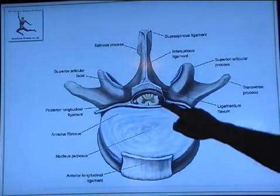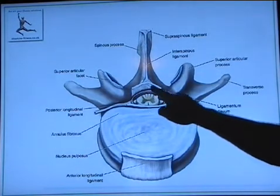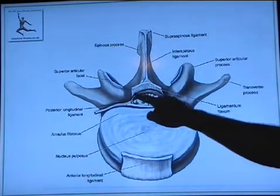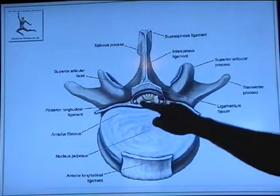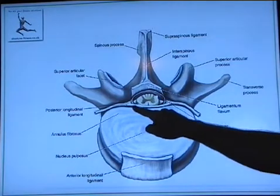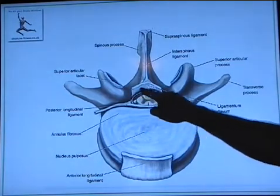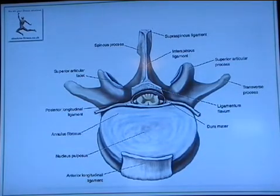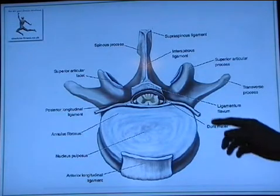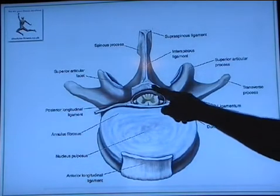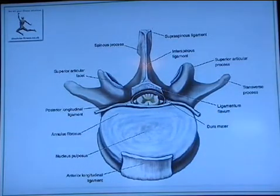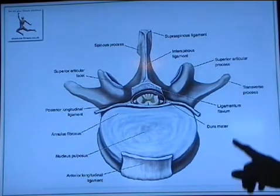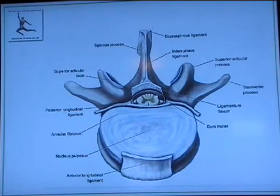Then on the back of the vertebral foramen — so we've got our spinal cord there and the posterior longitudinal ligament there — on the back of the vertebral foramen we have another ligament that also runs all the way from top to bottom. That's our ligamentum flavum.